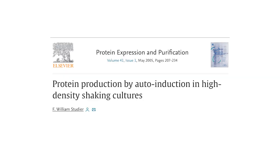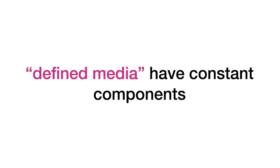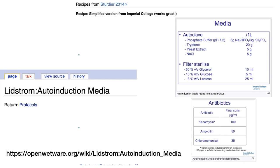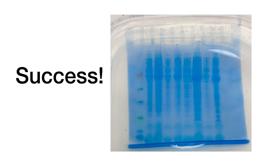The original protocol from Studier et al. in 2005 used a complicated, chemically defined mixture with precise amounts of many salts and sugars — it was really hard to make because all the ingredients had to be mixed at high concentrations and didn't dissolve very well. The newer simplified method just adds glucose, lactose, and glycerol to your normal media like TB media, and voilà — the cells should grow and start making protein.